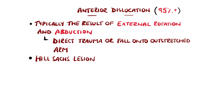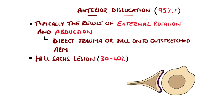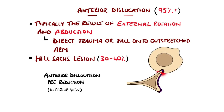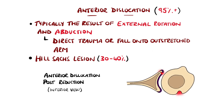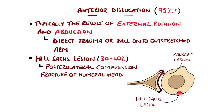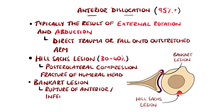In an anterior dislocation, due to the posterolateral portion of the humeral head being compressed against the anterior part of the glenoid labrum, there can be compression fractures on the humerus known as Hill-Sachs lesions. They are closely linked with Bankart lesions, which is a rupture in the glenoid labrum. These can also be accompanied by avulsion fractures, which are then termed bony Bankart lesions.